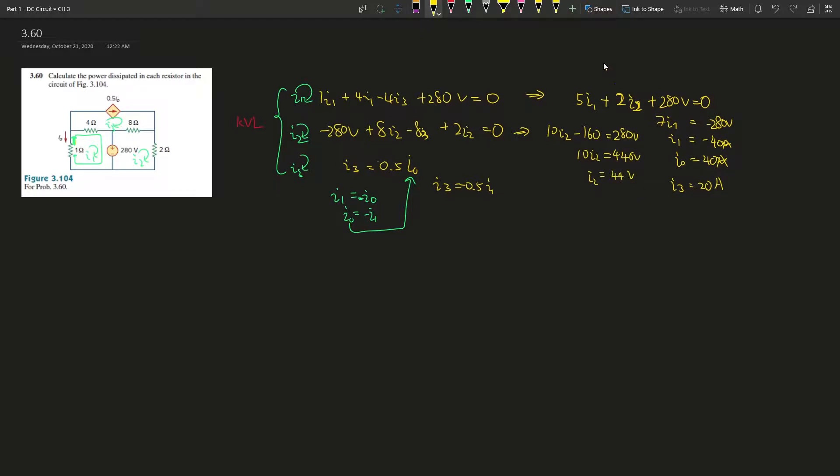So now we have I2, we have I1, I0, and I3, and we should be able to solve for all the power dissipated in each resistor. For power at 1 ohm resistor, that is going to be I0 squared. I0 is 40, so 40 squared times 1, which is 1600 watts.